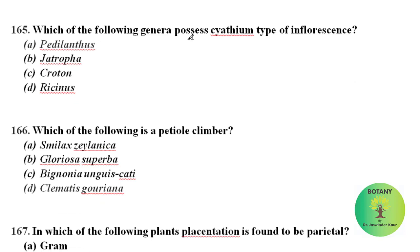Which of the following genera possesses Cyathium type of inflorescence? Cyathium type of inflorescence is a characteristic feature of family Euphorbiaceae, and it is present specially in genus Euphorbia. Other than Euphorbia, it is also present in genus Pedilanthus of Euphorbiaceae.